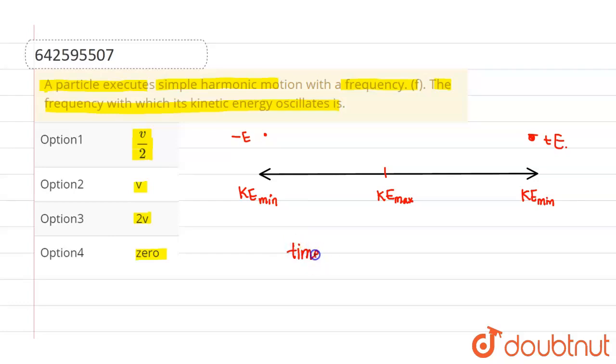So the time period of kinetic energy oscillation is T by 2, where T is time period of SHM. So the frequency of kinetic energy is given by 1 upon T by 2, which comes out to be 2 by T. And as we know that the frequency of SHM is 1 by T, so it is given as two times frequency of SHM.